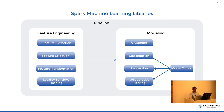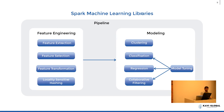You have a feature engineering set of capabilities to make the data model-ready, and then another set of modeling algorithms you apply on the actual data to achieve your objective function. The whole thing sits within a framework called pipeline, which I will explain in a bit — it essentially eases the model development process. These are the various components of the Spark machine learning library at a high level.